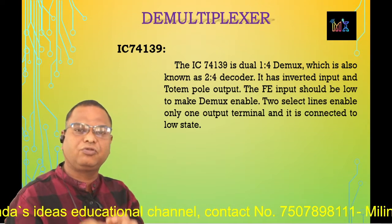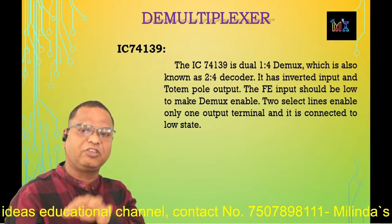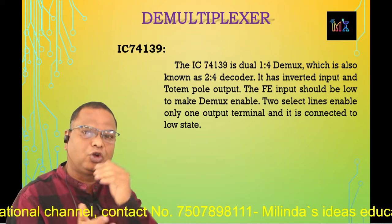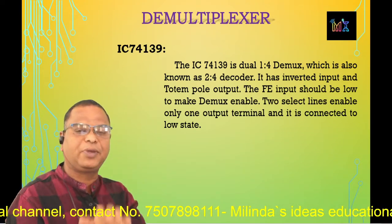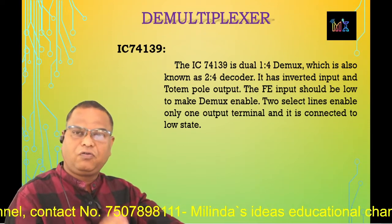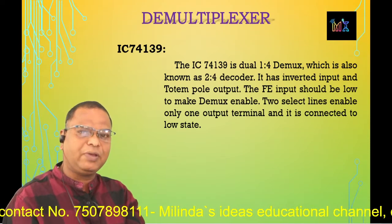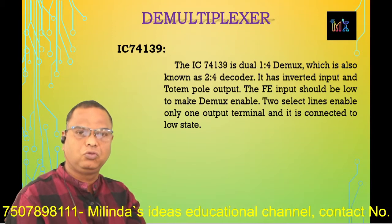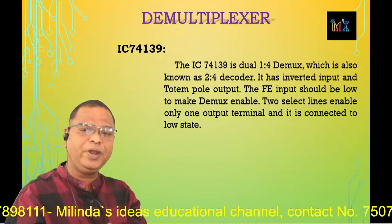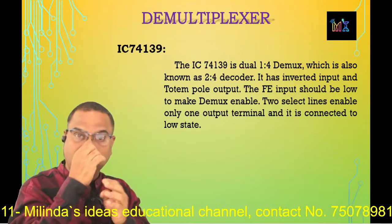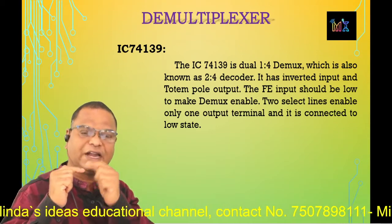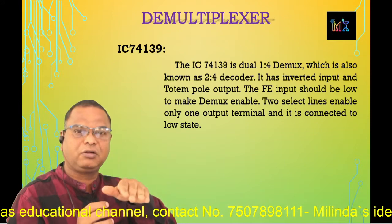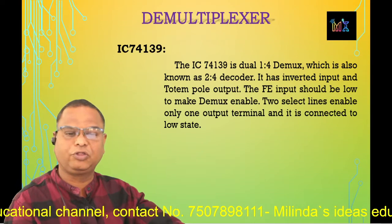IC 74139 is a 1-to-4 demux, also a 2-to-4 decoder, because the two control inputs S1 and S0 are connected to binary inputs B0 and B1, and those control inputs convert to decimal output appearing at output terminals Y0 to Y3. For example, when the strobe input F̄Ē is low and control inputs S1 and S0 are both low, Y0 output now becomes active — the data is connected to output terminal Y0, so Y0 goes low.